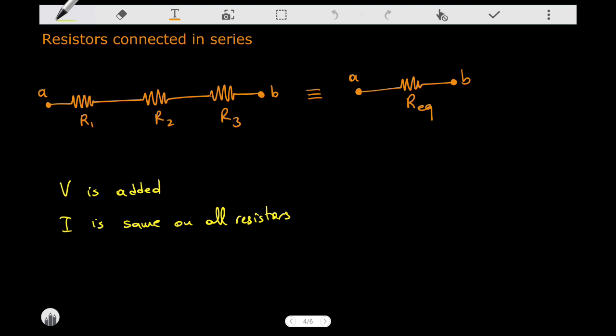What happens if the resistors are connected in series? In that case, the current has the same value on all resistors, but the potential drops are added up.